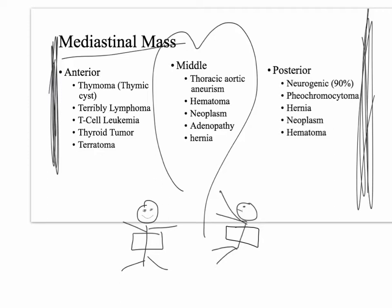For the posterior, 90% are neurogenic - it's almost enough to just remember neurogenic. But if you think about what's in the back, you could also consider a metastasis from pheochromocytoma, a hernia, any type of neoplasm, any type of metastasis, or a hematoma, because you have so many vessels including the descending aorta and all of its side branches.